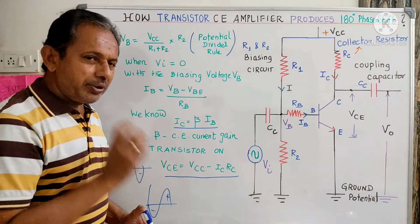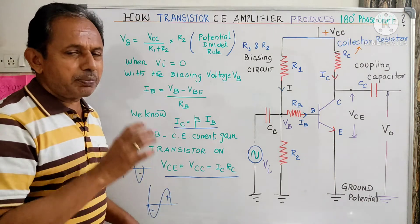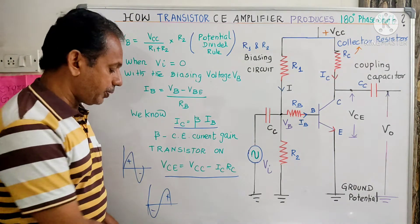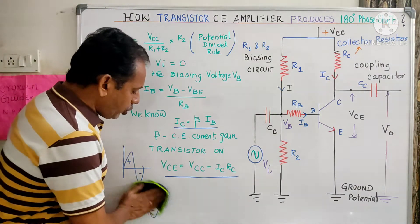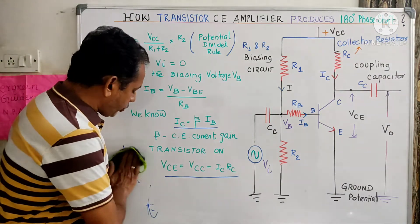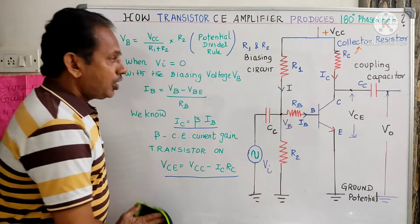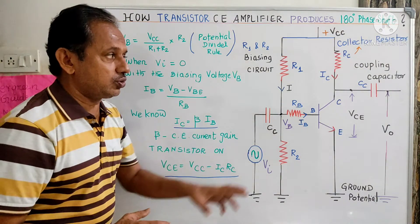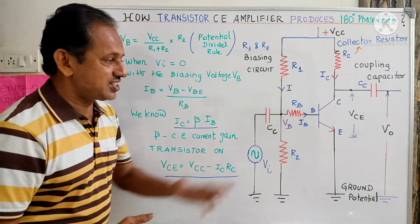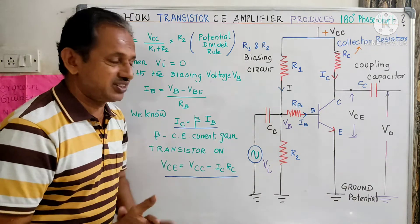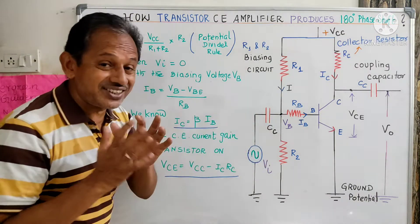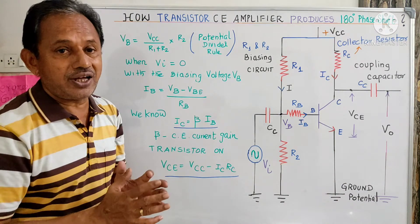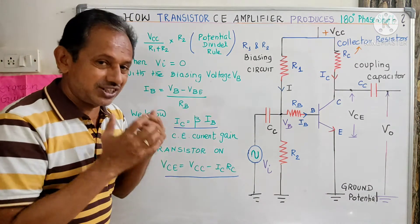This is the common emitter amplifier. This is the phase shift it produces. This is the basic part of the amplifier. The main component is the transistor. RC is the collector resistance, RB is the base resistance, and RM is the biasing network. The biasing network keeps the transistor in forward bias.